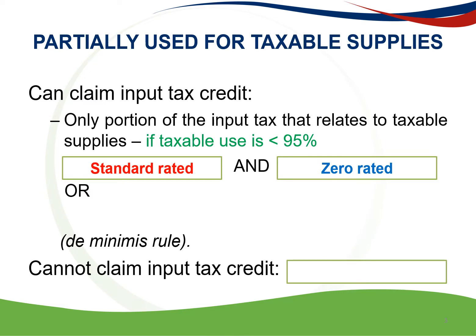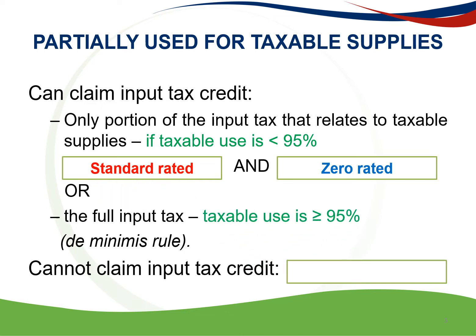However, if 95% or more of the purchased goods or services will be used in the making of taxable supplies, the full Input Tax credit may be claimed and no apportionment is necessary. This is the so-called de minimis rule. De minimis is a Latin phrase that means something that is too small or insignificant to be important.